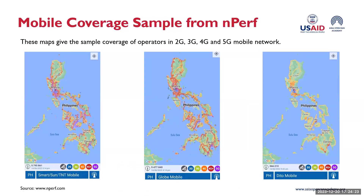On the Smart mobile map there is a dense concentration of 4G and some 5G coverage in major urban centers like Metro Manila, Cebu, and Davao, with widespread 2G and 3G coverage across the archipelago. This indicates a mature network with extensive reach, albeit with varying levels of service indicative of transitioning technology phases. On the Globe map, a similar pattern appears with robust 4G presence and emerging 5G spots in metropolitan areas, and the network extends to less populated areas, suggesting Globe's commitment to nationwide connectivity.